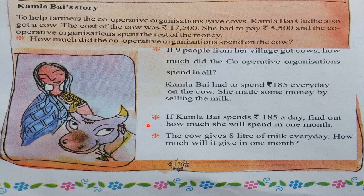Whether we have to do subtraction, whether we have to do multiplication — and if multiplication, which two numbers we have to multiply, that also we have to find out. Just by reading the word problem thoroughly, we can come to know what type of operations we are going to do. Always remember one thing: maths is easy. If you read the word problem properly, you will come to know which operations you have to do.